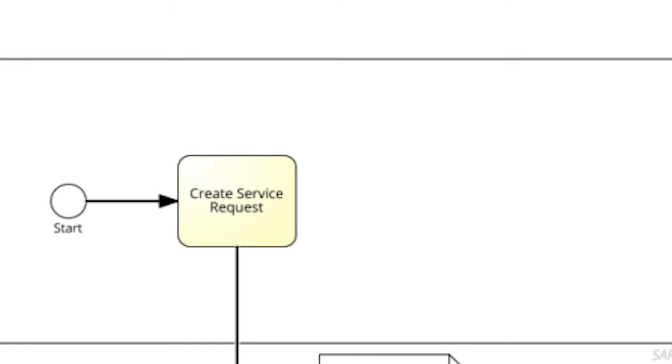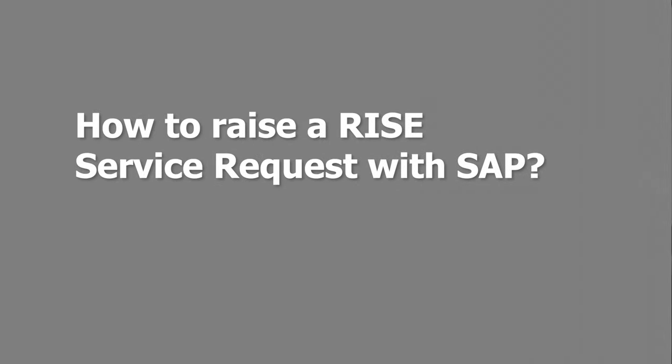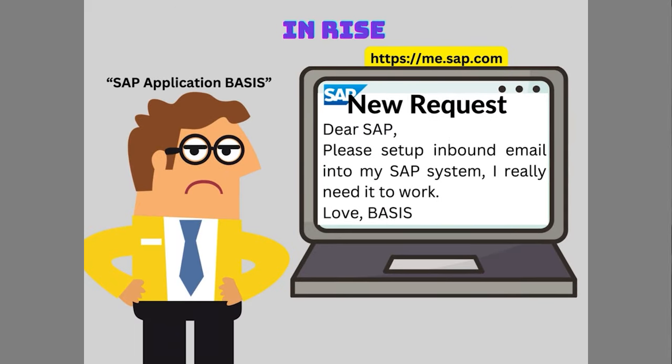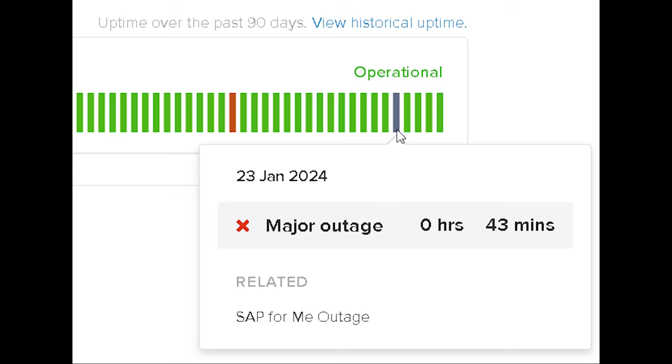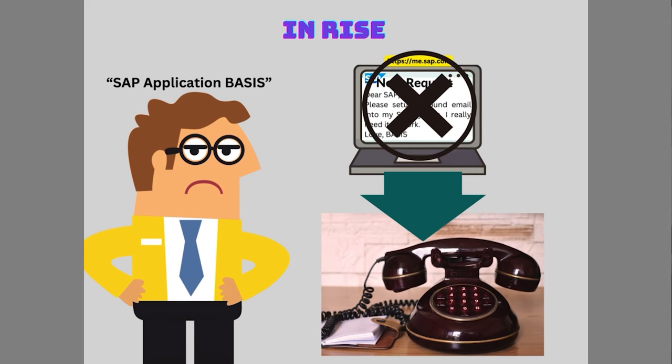Remember, these are publicly available. As you have seen, the process flows all start with create service request. So how does our typical Basis administrator raise a service request with SAP? That all gets done from within the SAP support portal launchpad, me.sap.com, or whatever you want to call that today. If that portal is not available and your request has some level of urgency, then you will need to call SAP using something we used to call a telephone. Remember those?